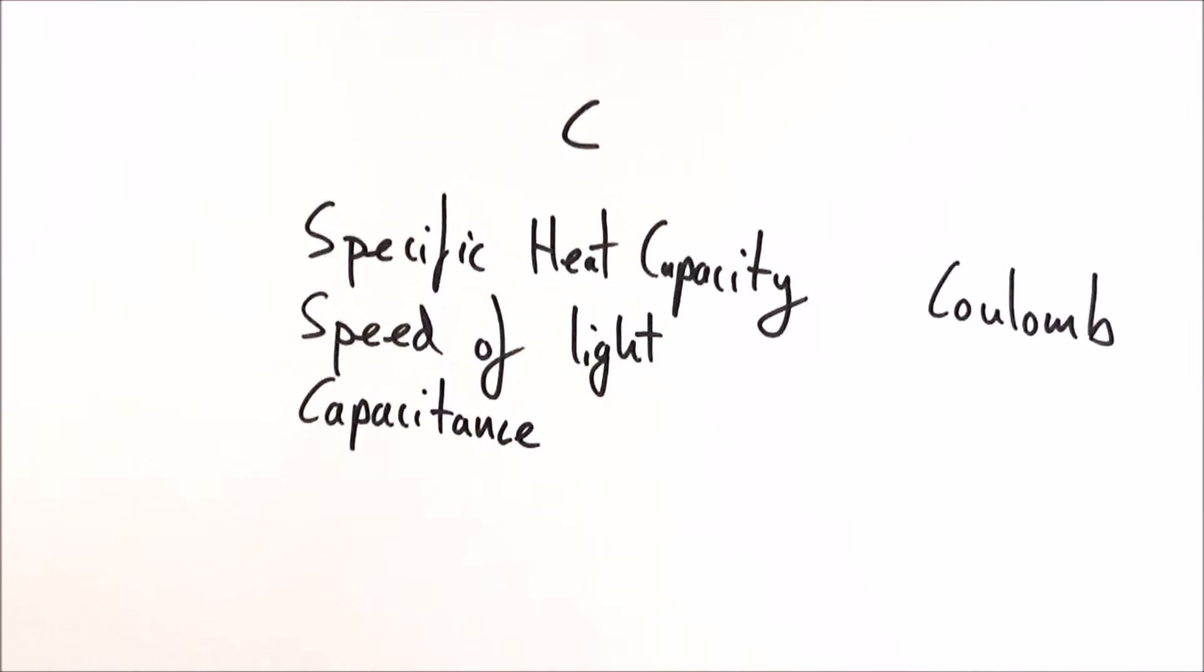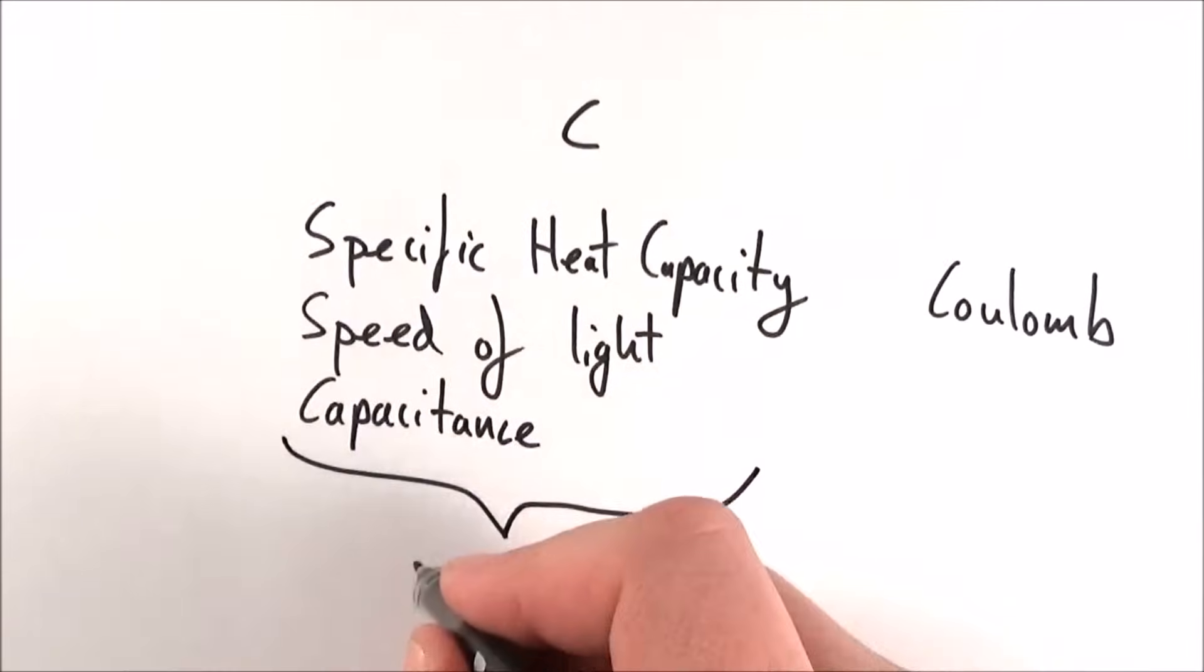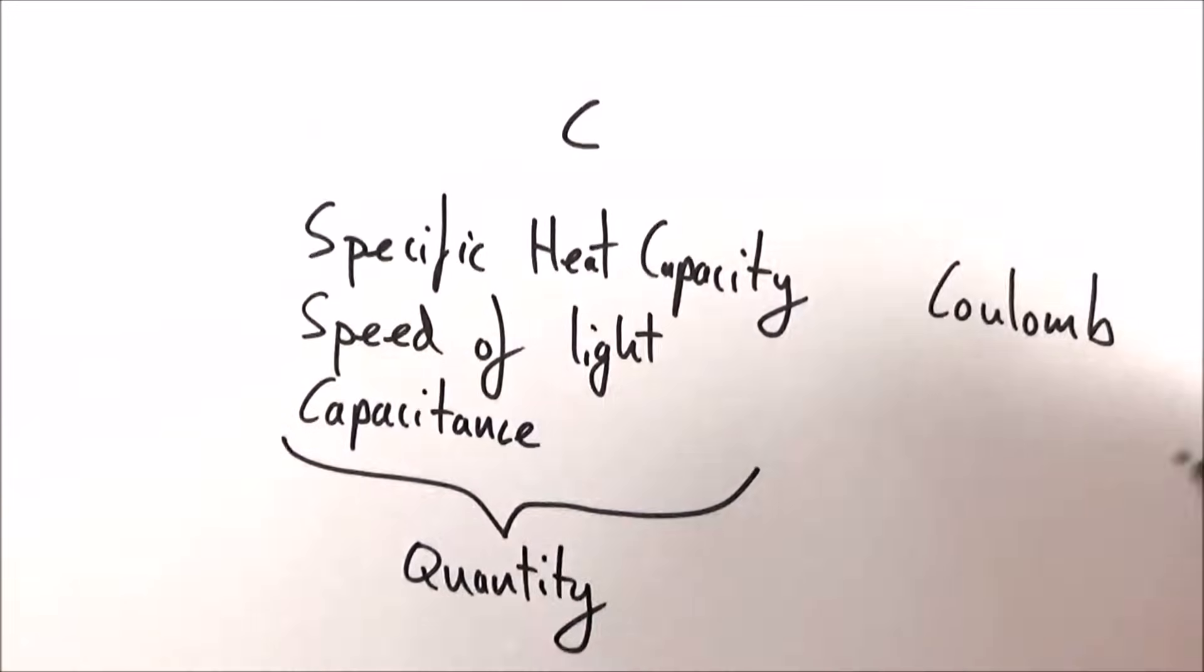Now in the two columns here, the ones on the left are the amount of something, and this is what we call a quantity. A Coulomb is what we measure something in, and that's a unit.